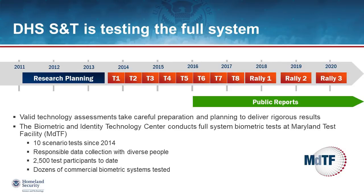Recognizing the need to supplement algorithm testing with objective evaluations of full biometric systems, DHS S&T planned out a comprehensive biometric evaluation program in 2011 and set up a dedicated test facility in Maryland to identify systems that work well on diverse groups of people. Two years later, evaluations of commercial biometric systems began in earnest, eventually leading to the DHS S&T biometric technology rallies, which began in 2018, continued in 2019, and are planned for 2020. We began publishing reports on these evaluations, including reports on equitability, around 2016. To date, we've responsibly collected data using mechanisms like informed consent and supervision by a research review board since 2014, testing dozens of commercial biometric systems and over 2,500 volunteer test participants.